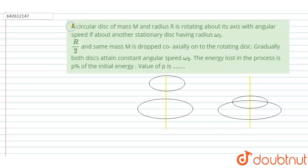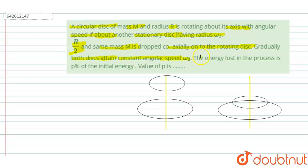Hello, welcome to DoubtNet. In this question, a circular disk of mass capital M and radius capital R is rotating about its axis with angular speed omega_1. A stationary disk having radius R by 2 and the same mass capital M is dropped coaxially on the rotating disk. Gradually both disks attain a constant angular speed omega_2. The energy loss in the process is P percent of the initial energy. What is the value of P?